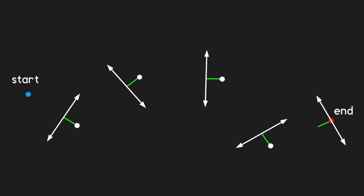To follow the path, our unit will move from the start point straight towards the next point. As soon as the unit passes the turn boundary, however, it will start rotating towards the next point, and so on. Once the unit passes the final turn boundary — which we can think of as the finish line — the path is complete.